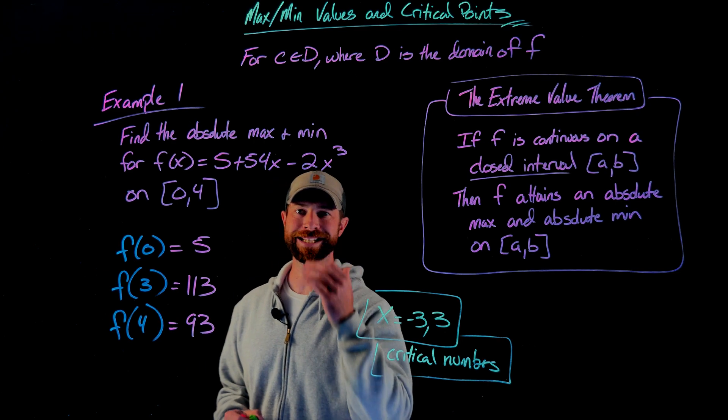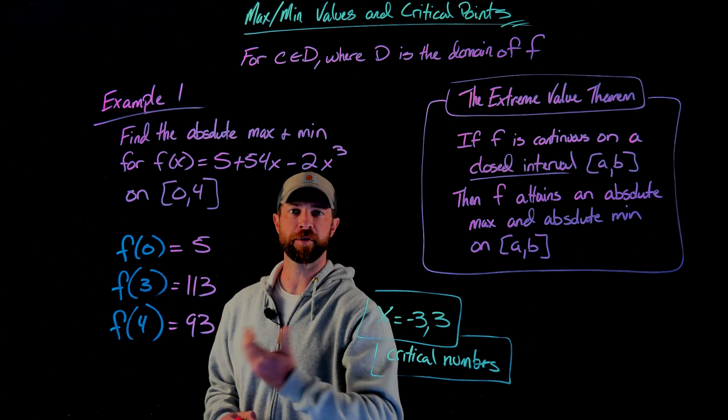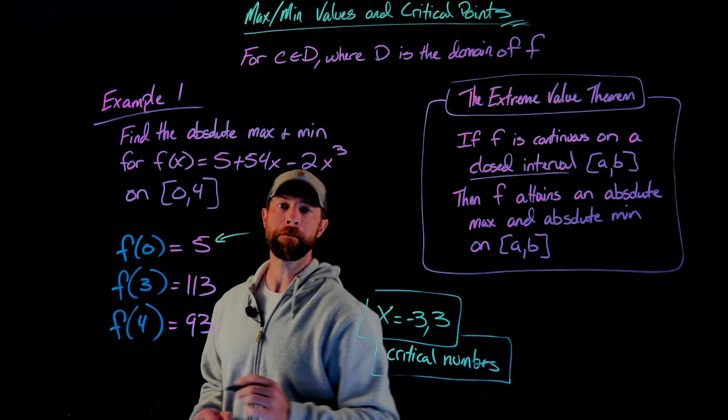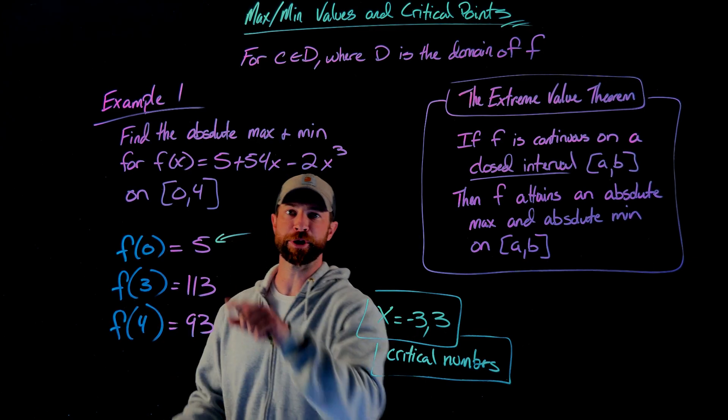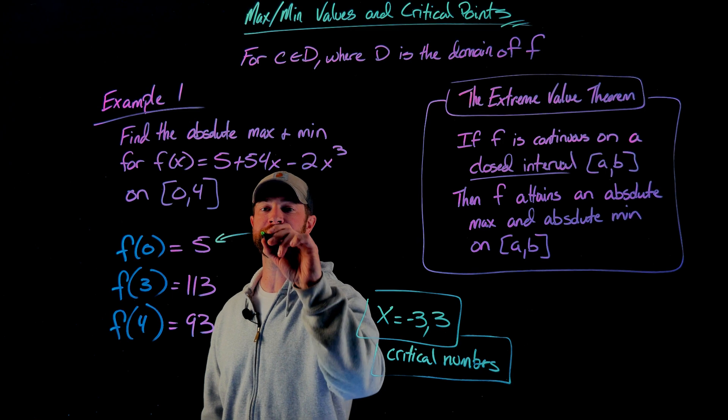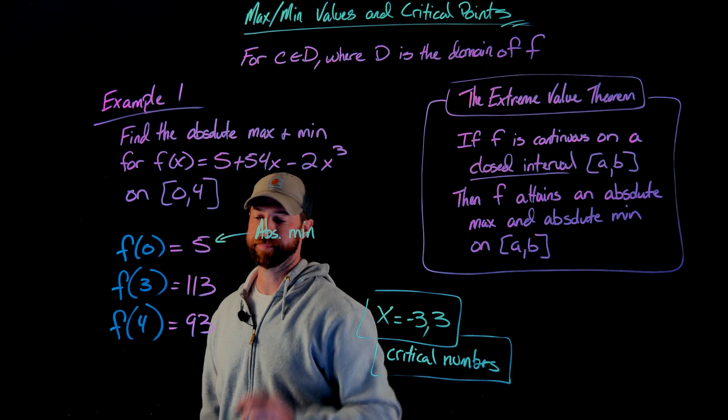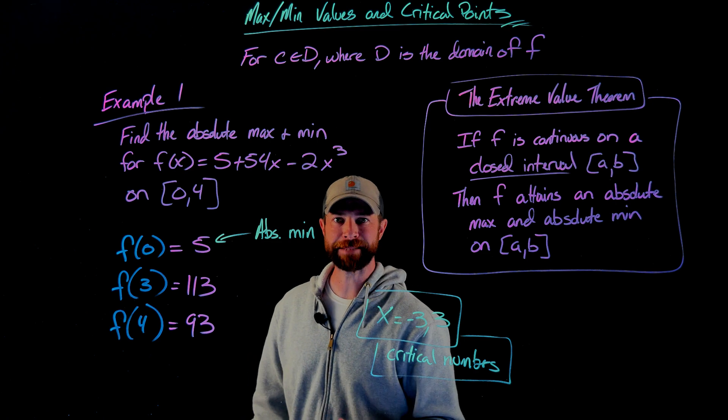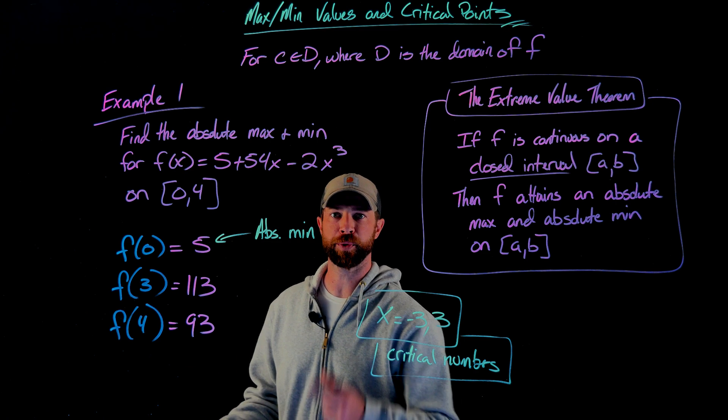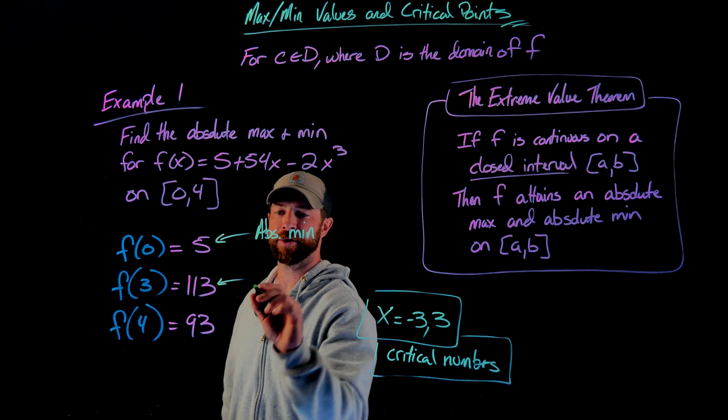For this function on the closed interval from 0 to 4, I have an absolute minimum value at x = 0. My absolute minimum value is 5. And my absolute maximum value occurs at x = 3. My absolute maximum value is 113.